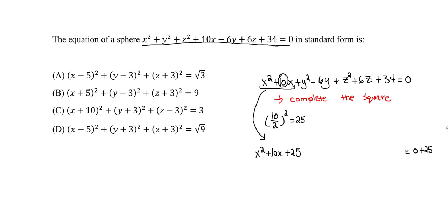Now we move to the y terms and do the same steps. We take negative 6 divided by 2, which is negative 3, and negative 3 squared is positive 9. So we rewrite y squared minus 6y and add 9, and we must also add 9 to the other side.